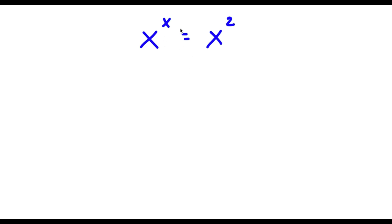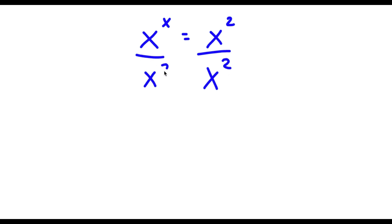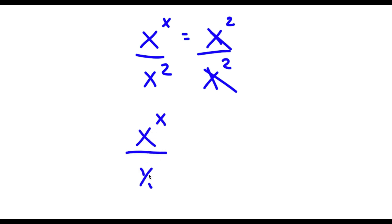So I have x to the power of x is equal to x to the power of 2. The first thing I'm going to do is divide both sides by x to the power of 2. These two are going to cancel out and I'm going to be left with x to the power of x over x to the power of 2 is equal to 1.